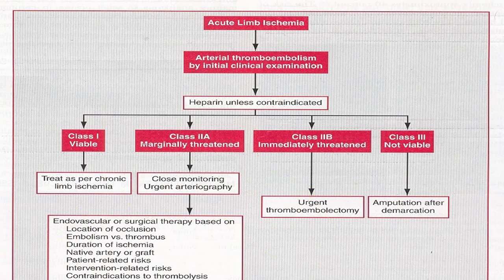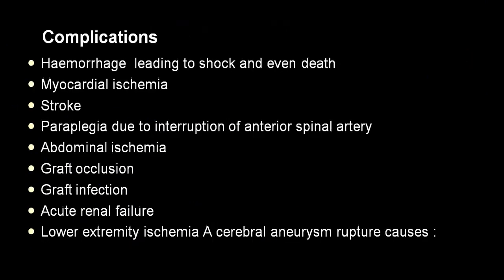The two most common complications are dissection and thromboembolism. Very rarely a fistula formation occurs. Local compression — most commonly on trachea, esophagus, nerves, and vertebra — is also a complication. Because of rupture: hemorrhage, acute MI, stroke, shock, AKI, lower limb ischemia, and aortic regurgitation can all occur.